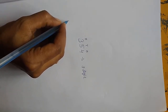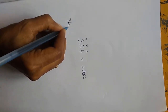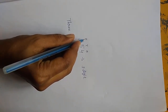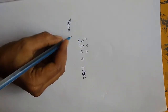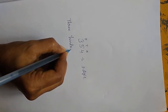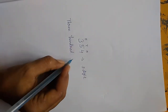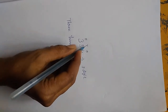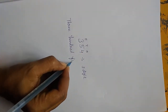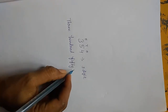Write the spelling: 300 — T-H-R-E-E. What is the family here? Hundreds, so 300 is three hundred. How many tens here? 5 tens means 50. So write: F-I-F-T-Y, that is 50.